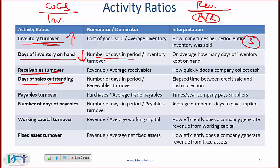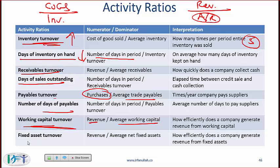Days of sales outstanding is 365 divided by receivables turnover. Payables turnover is purchases divided by average payables. Since purchases may not appear directly on statements, a proxy is cost of goods sold, or more accurately cost of goods sold adjusted for the change in inventory. Number of days of payables is 365 divided by payables turnover. Working capital turnover is revenue divided by average working capital, and fixed asset turnover is revenue divided by average fixed assets.